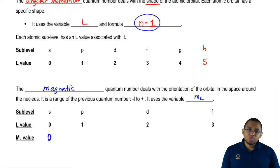But when L is one, there is such a thing as positive one or negative one. So m sub L would be negative one to positive one and all the whole numbers in between. So it would be negative one, zero, positive one.